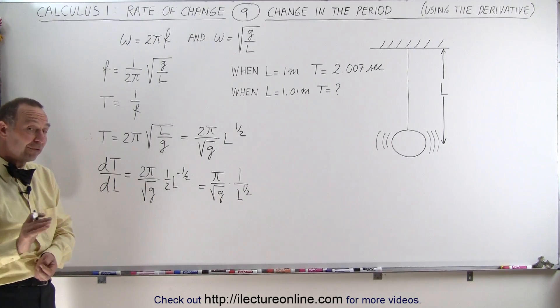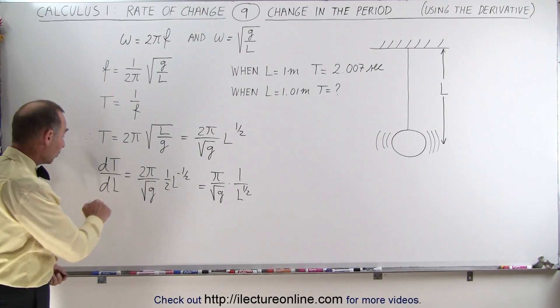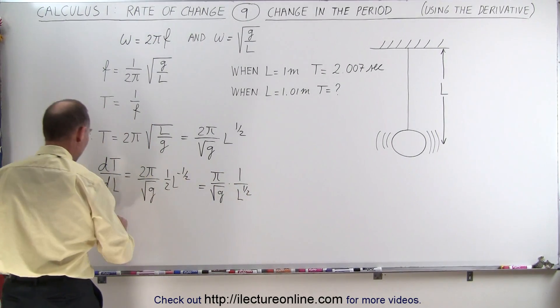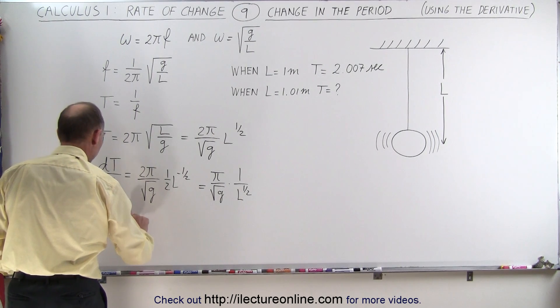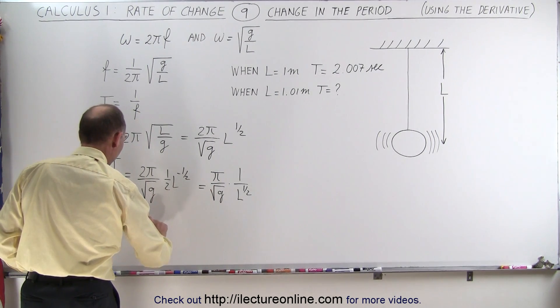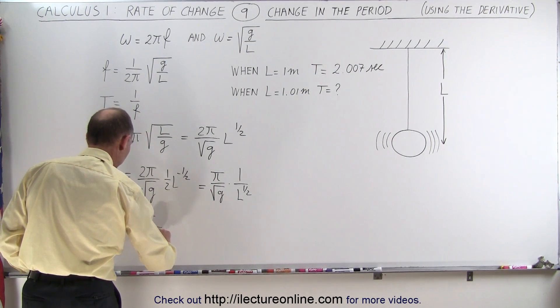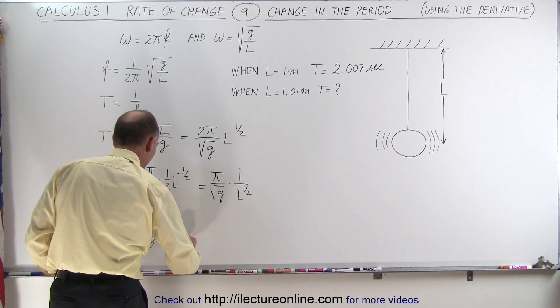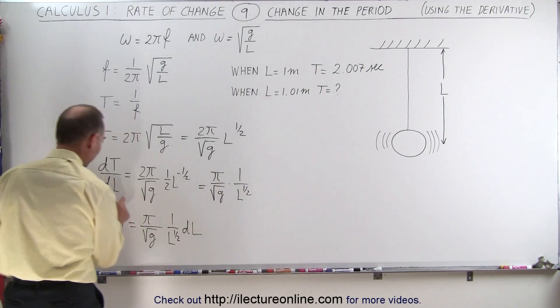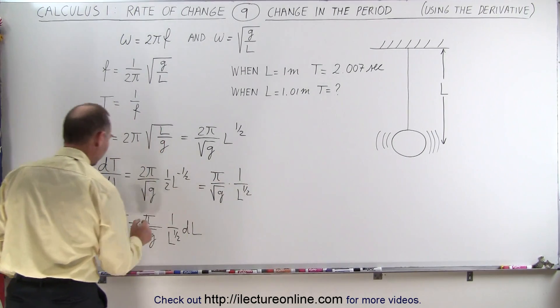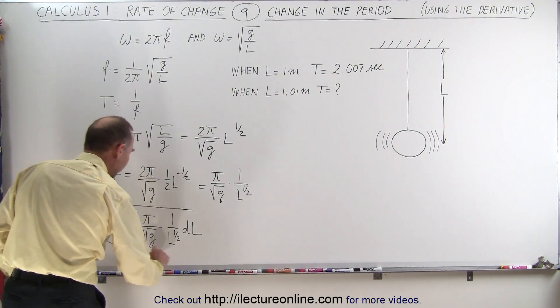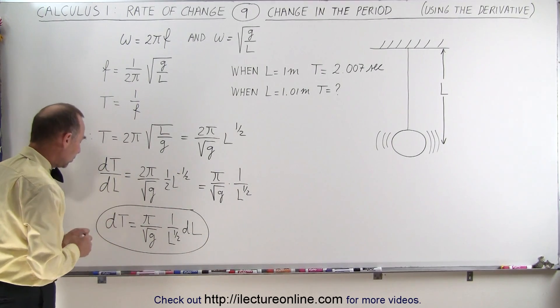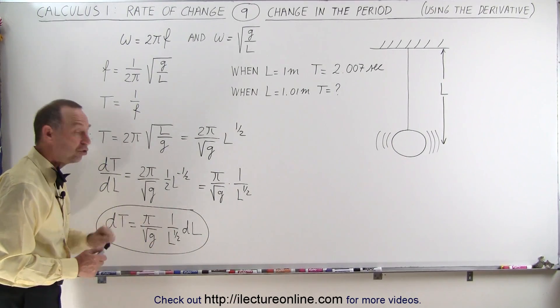So if we want to find the change in the period, we take our dL to the other side. And we can write that the change in the period is equal to π divided by the square root of g times 1 over L to the 1/2 power times dL simply by moving our differential to the other side. And now using the derivative, we find the relationship between the change in the period and the change in L.